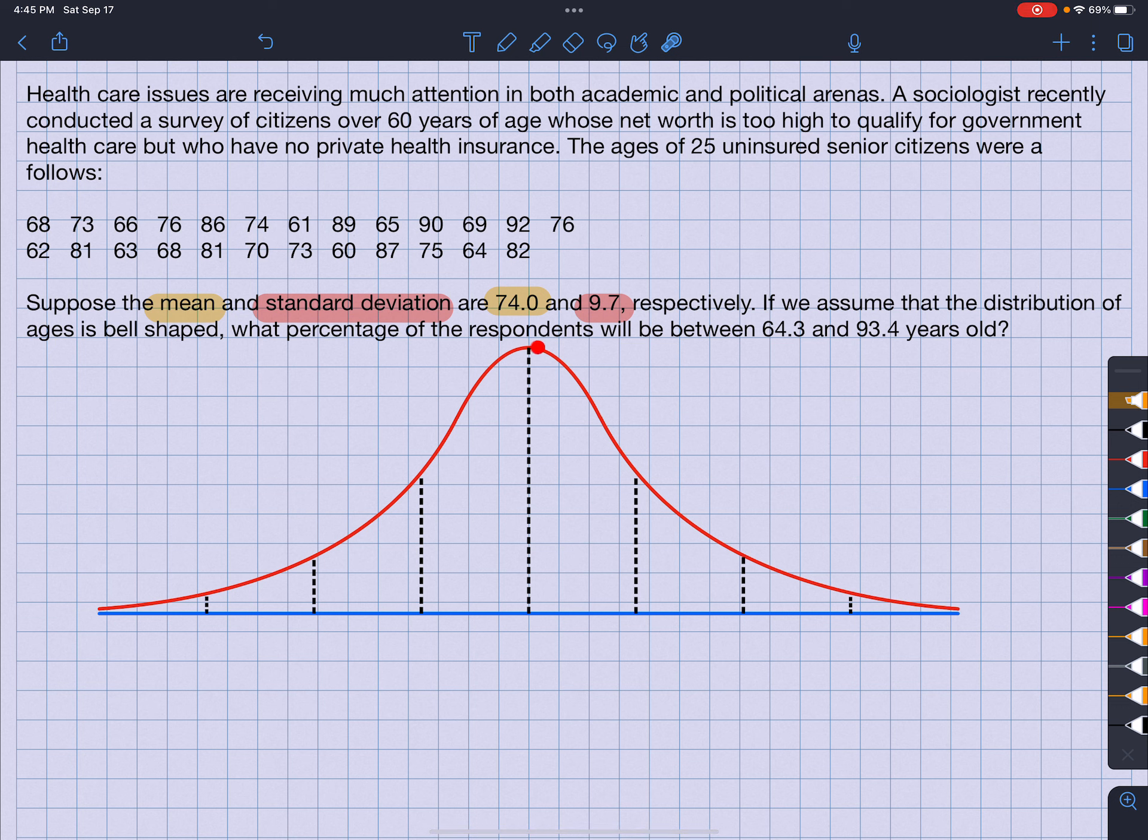Now, what percentage of respondents will be between 64.3 and 93.4? Well, first, let's fill this out. So 74.0 is here as the mean. Now I'm going to add 9.7 to get 83.7, add another 9.7 to get 93.4, and then add another 9.7 to get 103.1.